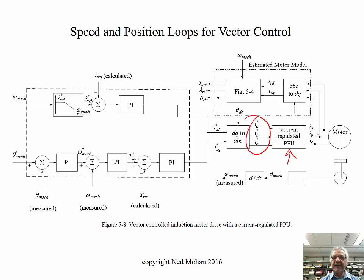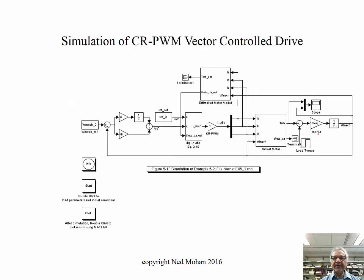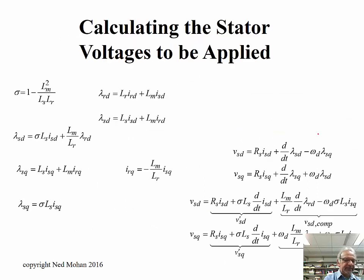So we should look at another scheme. What we'll say is that we need to supply those currents, ISD star and ISQ star, to the machine under this vector control operation. But it is possible to supply these currents by appropriately applying the voltages, because when you apply voltages, currents result. So that's our attempt.